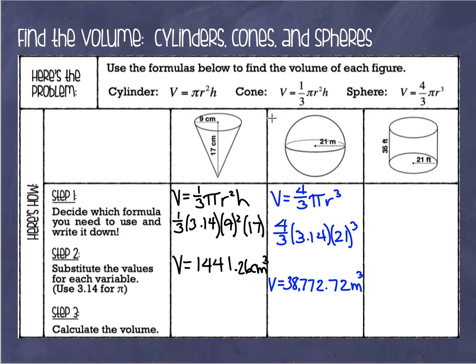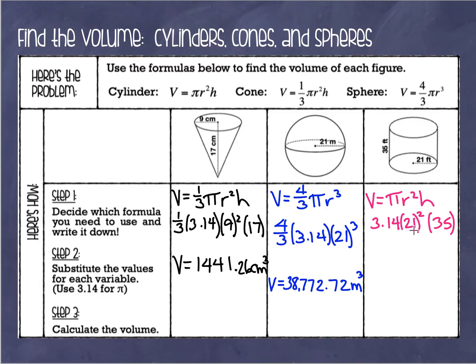Alright, our last one — this time we have a cylinder. Here's my formula for a cylinder: volume equals pi times the radius squared times the height. Let's fill in our numbers: pi is 3.14, the radius is 21 to the second power, and the height is 35. Let's take out the calculator and carefully enter: 3.14 times 21 squared times 35. That gives us 48,465.9.